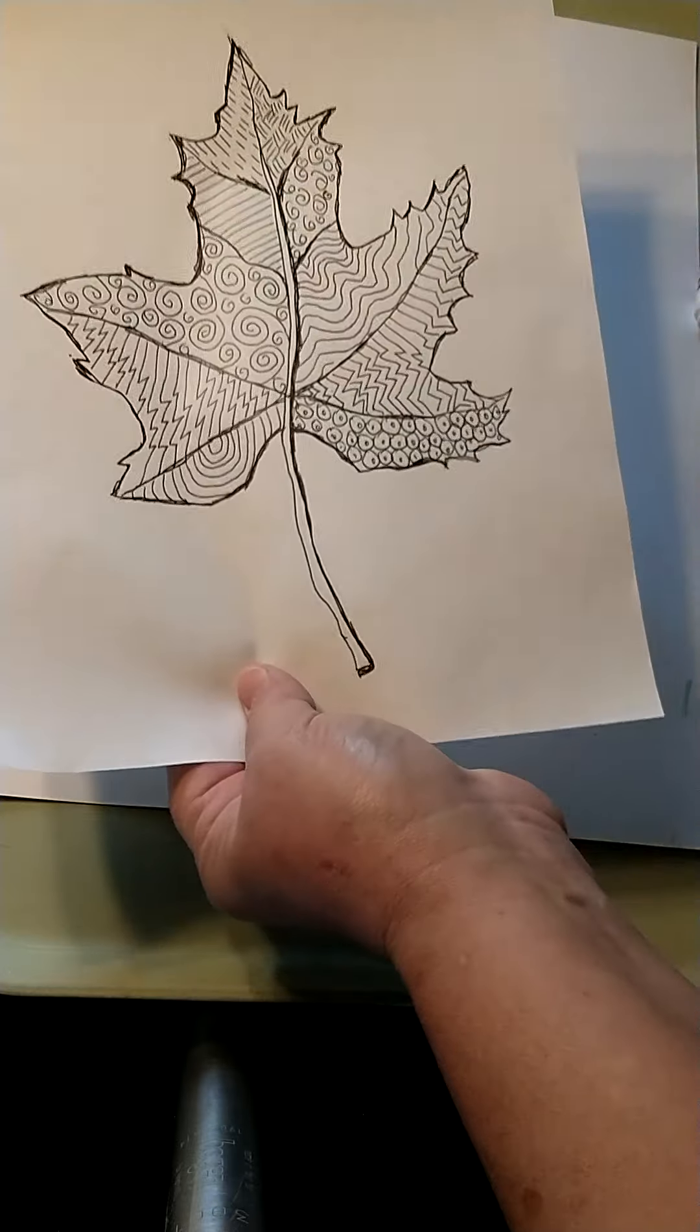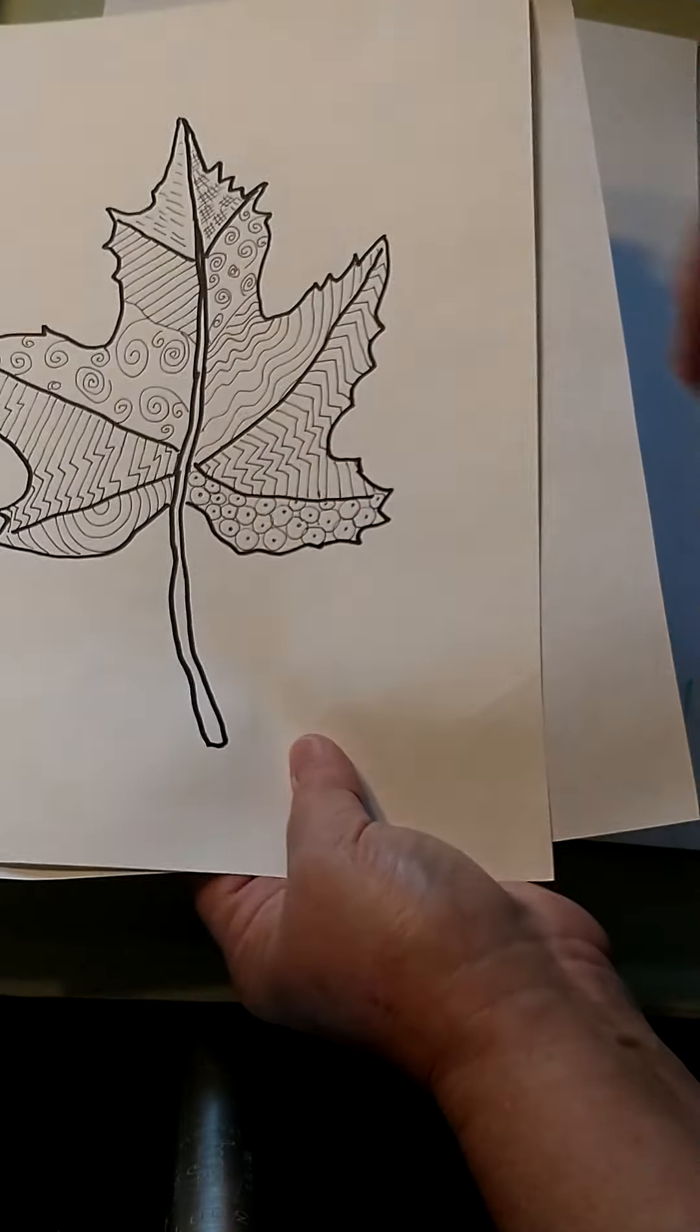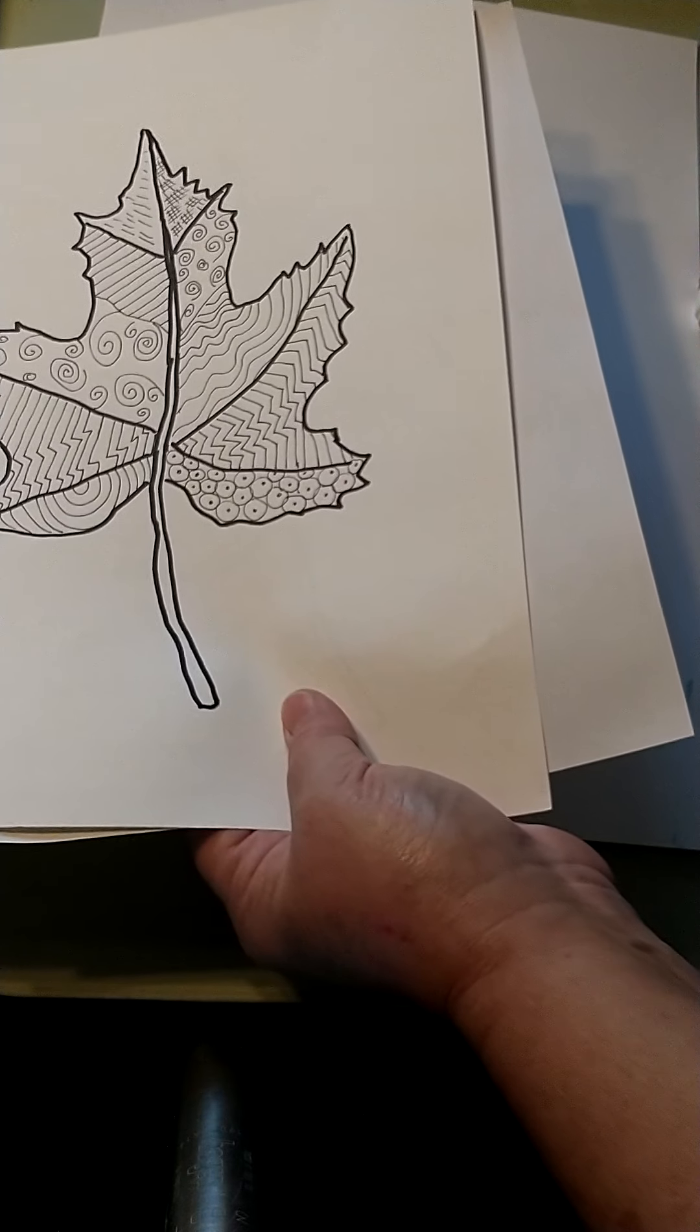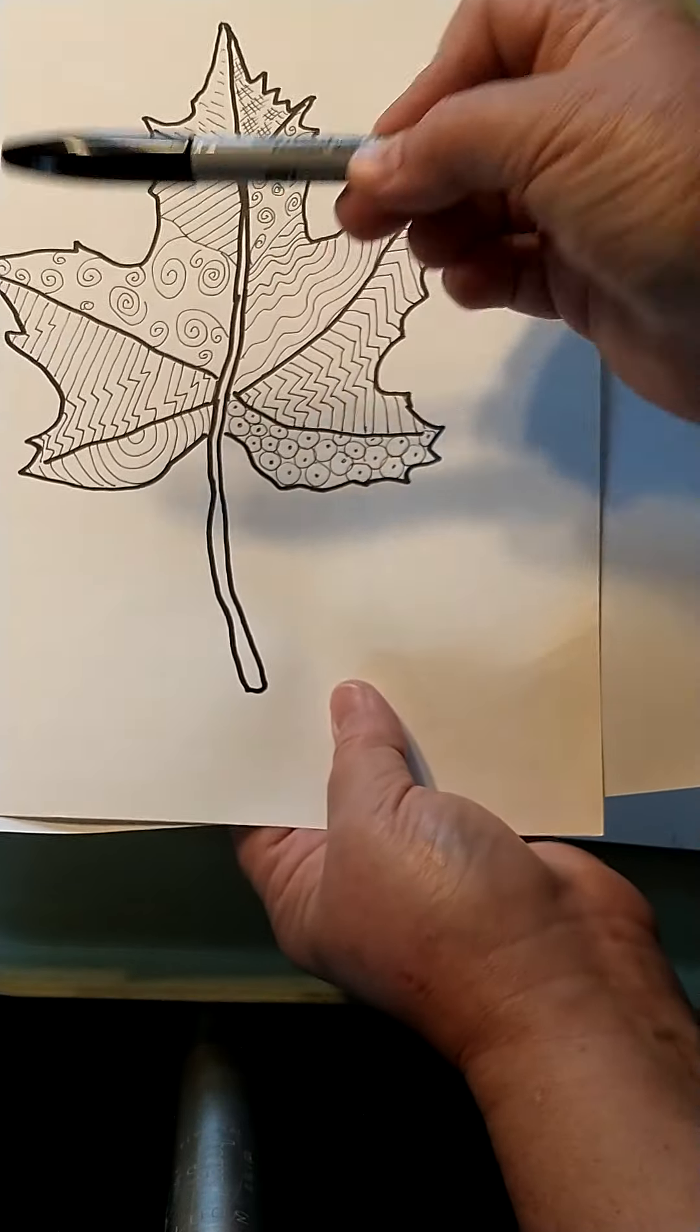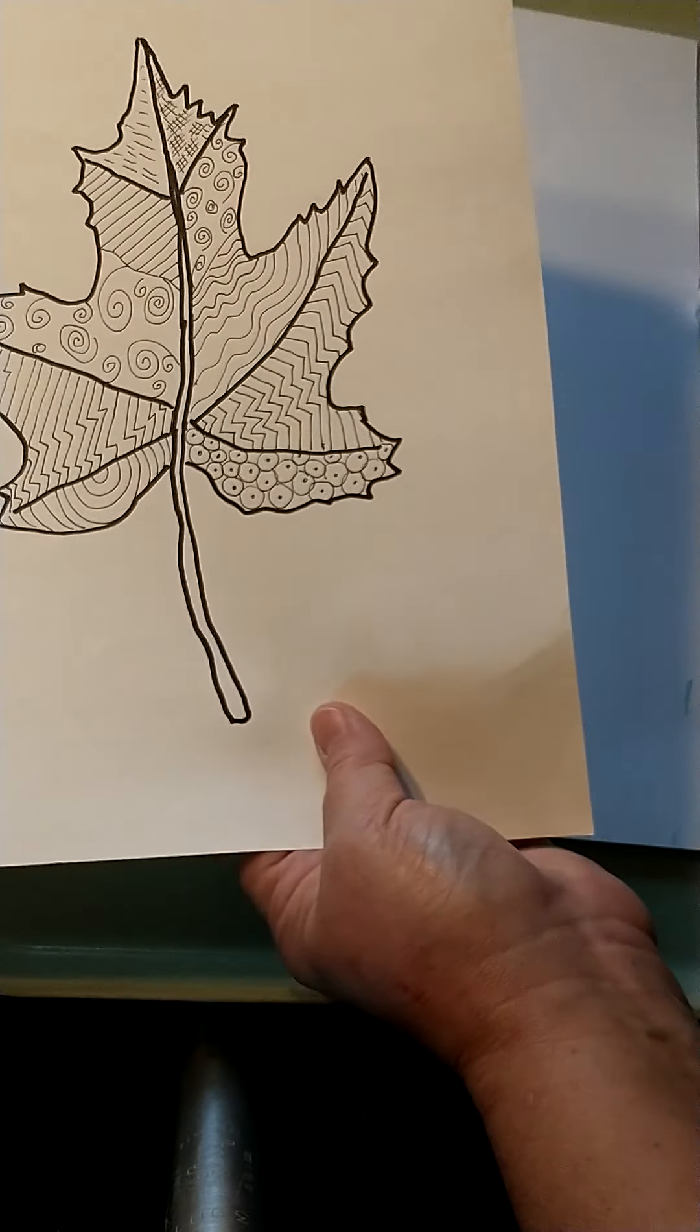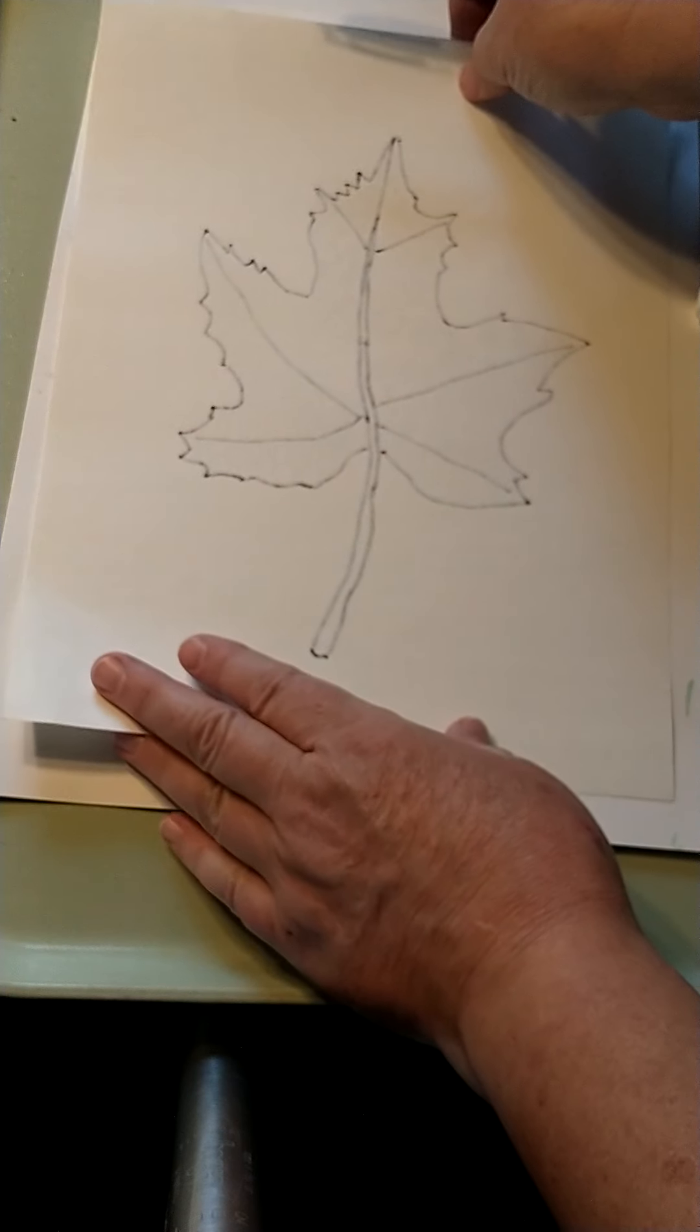So first I'm going to start with my print that I came up with. I traced it again, using a permanent Sharpie marker. So I used this permanent Sharpie marker. And now I'm going to turn it upside down on top of a white piece of paper so I can see it.